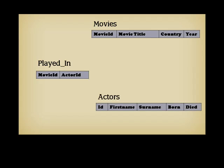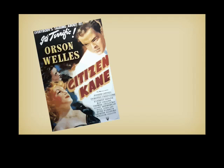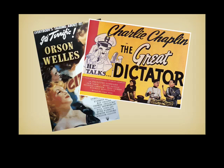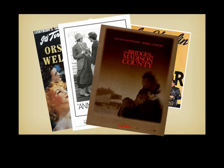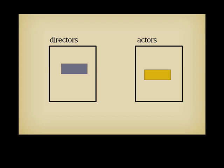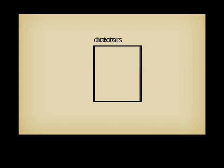Now, we still have a problem. Orson Welles directed and played in Citizen Kane. And actors turned directors, or directors who occasionally play in their own movies, are rather common. If we store separately directors and actors, some information will be duplicated. And if we update one table and forget the other one, we shall have inconsistencies. What we really want is to merge the two tables and keep all the information about one person at a single location.